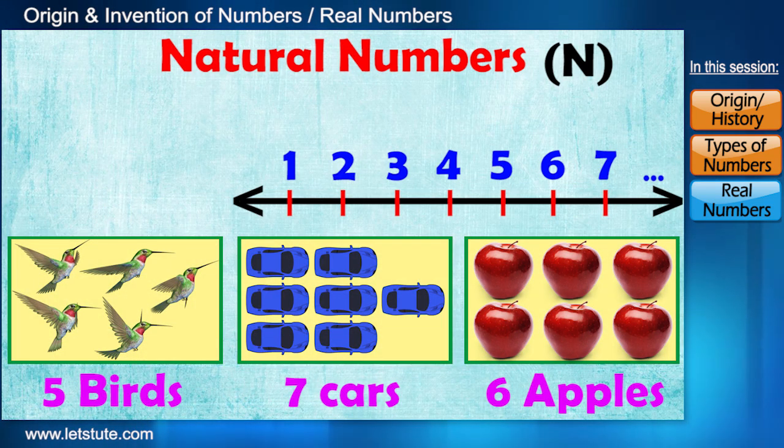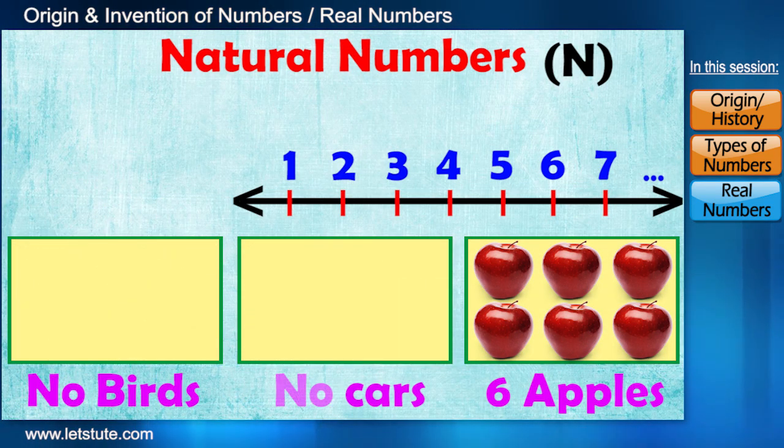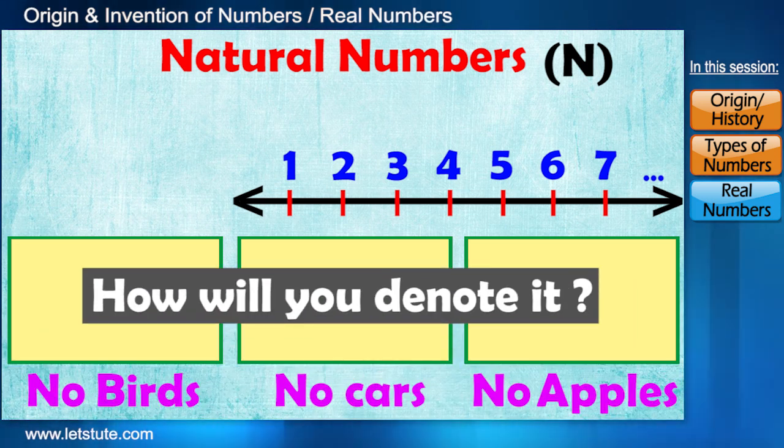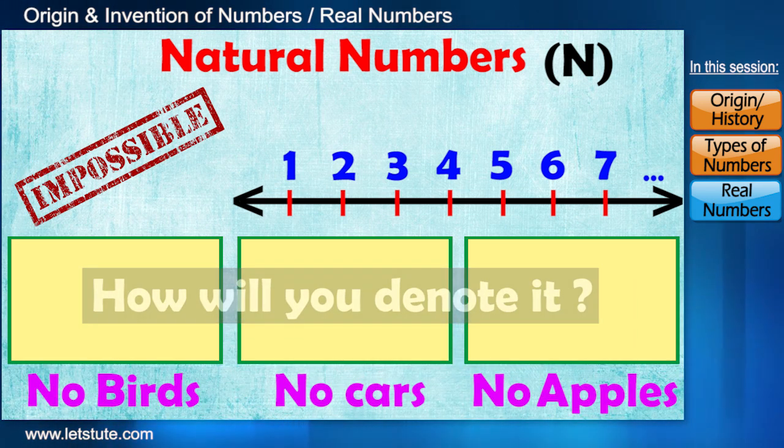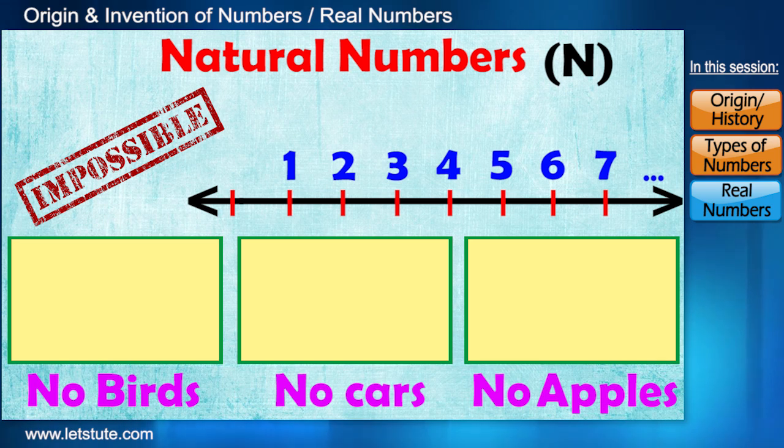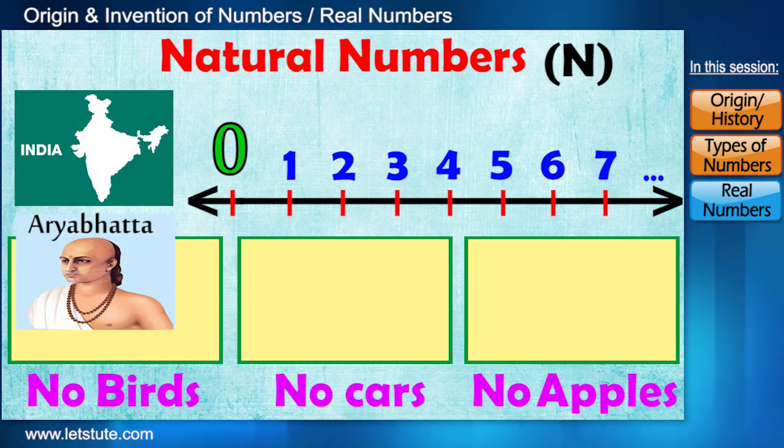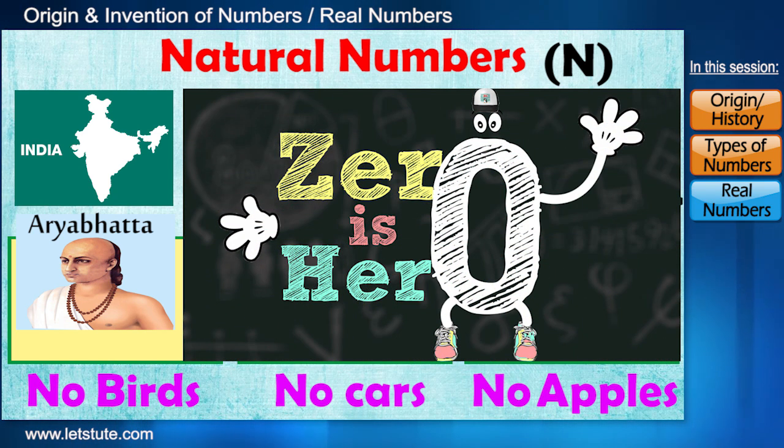But suppose there are no birds, no cars, or no apples, then how will you denote it? It's not possible, right? So here comes the need of a number called zero. Zero was invented in India and is used to represent nothingness. You can check out our exciting session completely dedicated to this amazing number.